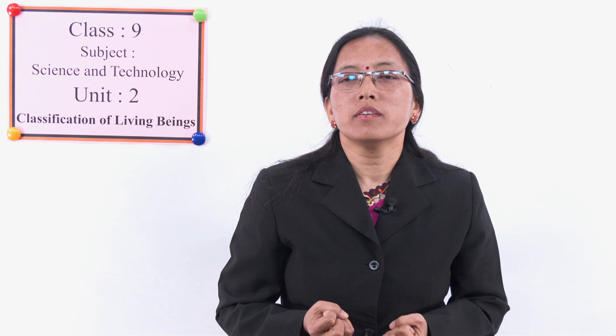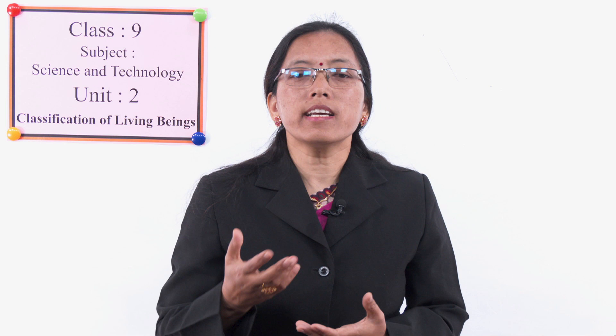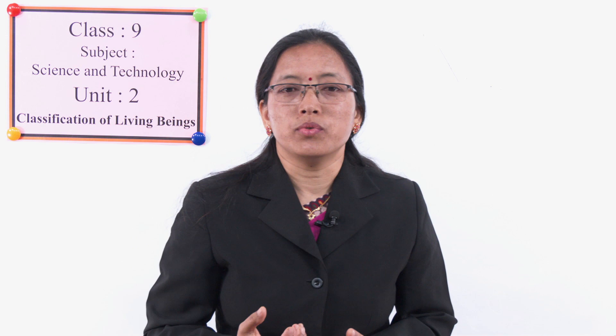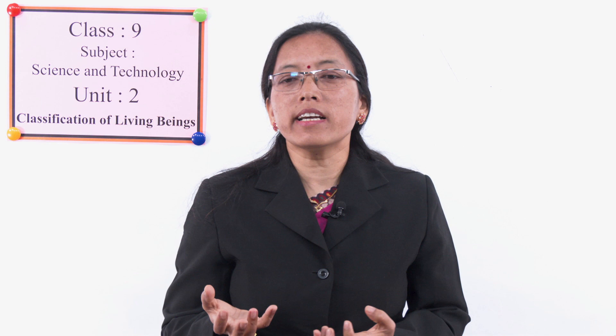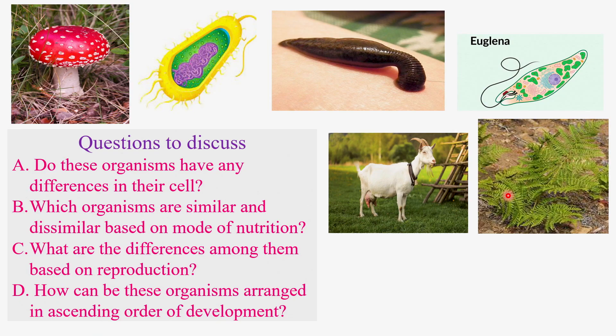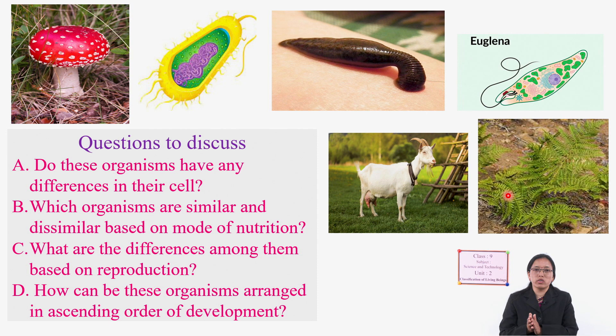Euglena is a single-celled organism but contains chlorophyll, so it photosynthesize its own food — it is an autotroph. Goat cannot prepare its own food; it eats plant leaves, so it is heterotrophic nutrition. Fern plant contains chlorophyll, so it can photosynthesize — it is also an autotroph. Based on nutrition, these organisms are different from each other.